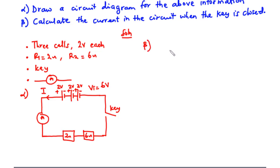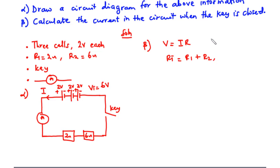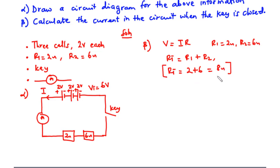Now let's find the current in the circuit when the key is closed. To find the current we are going to use Ohm's law: V equals I times R. We know V is 6 volts. We have R1 equals 2 ohms and R2 equals 6 ohms. Because the two resistors are connected in series, the total resistance is RT equals R1 plus R2, so RT equals 2 plus 6 which equals 8 ohms.